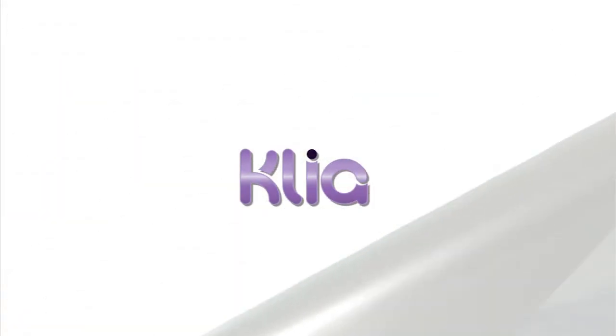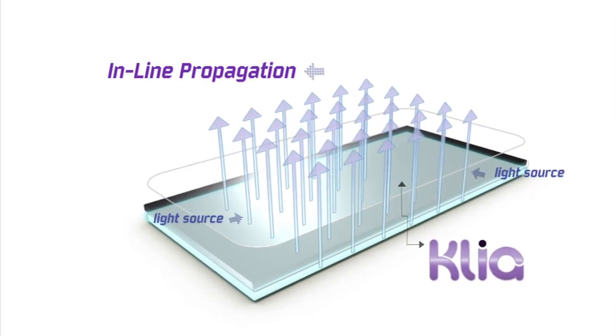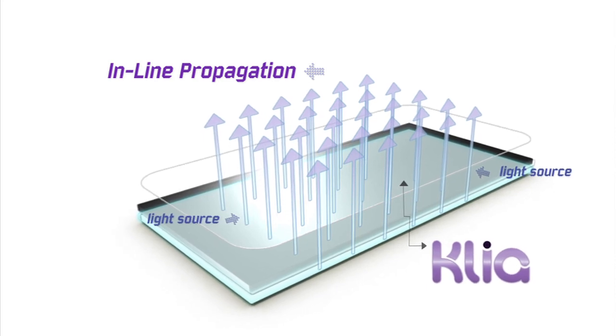The all-new Captus screen guard clear uses proprietary technology that allows in-line propagation of light through the material, hence eliminating diffraction.